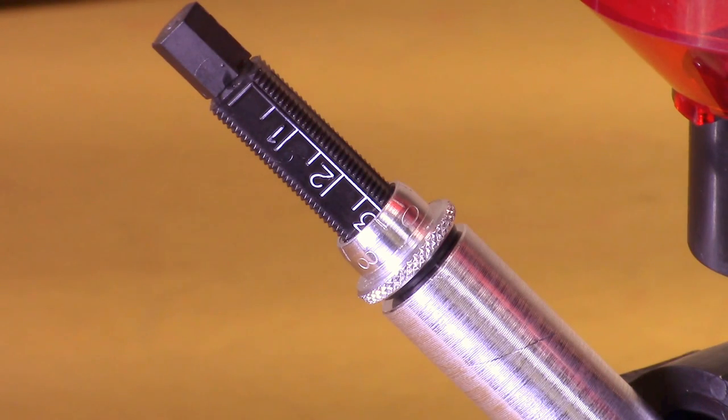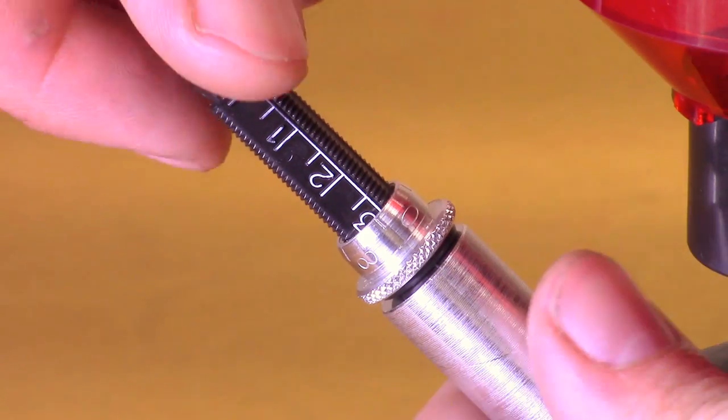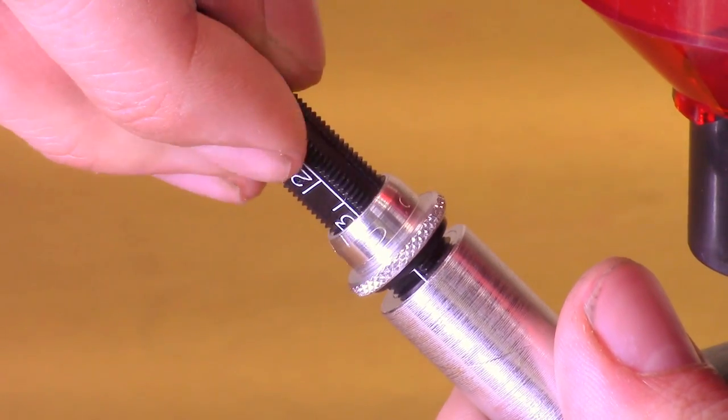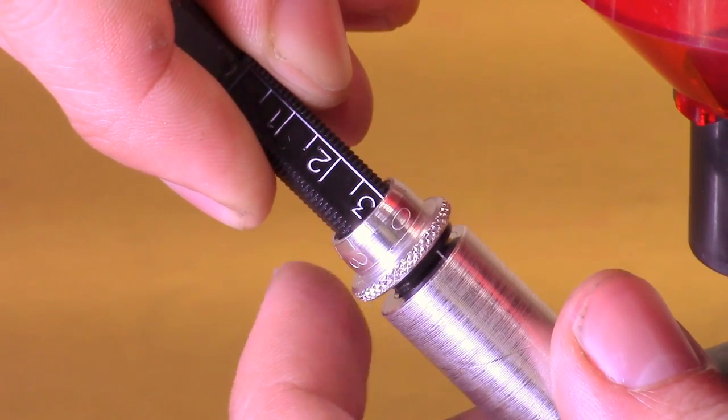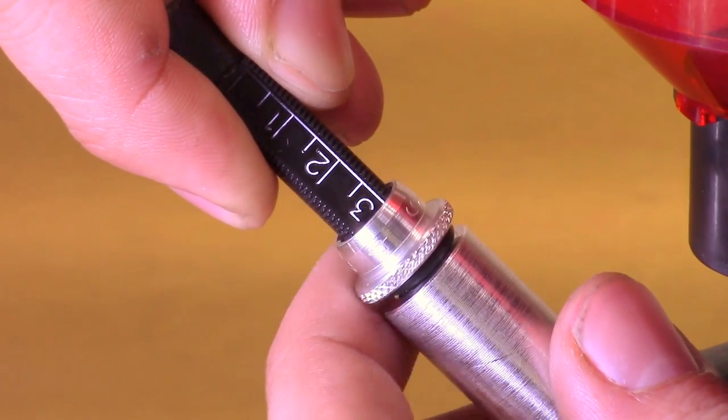Let's use 3.28 cubic centimeters as an example. Turn the thimble to the number 3 on the metering rod for the whole number to the left of the decimal point. The number 3 indicator line must be visible when the thimble is at 0.